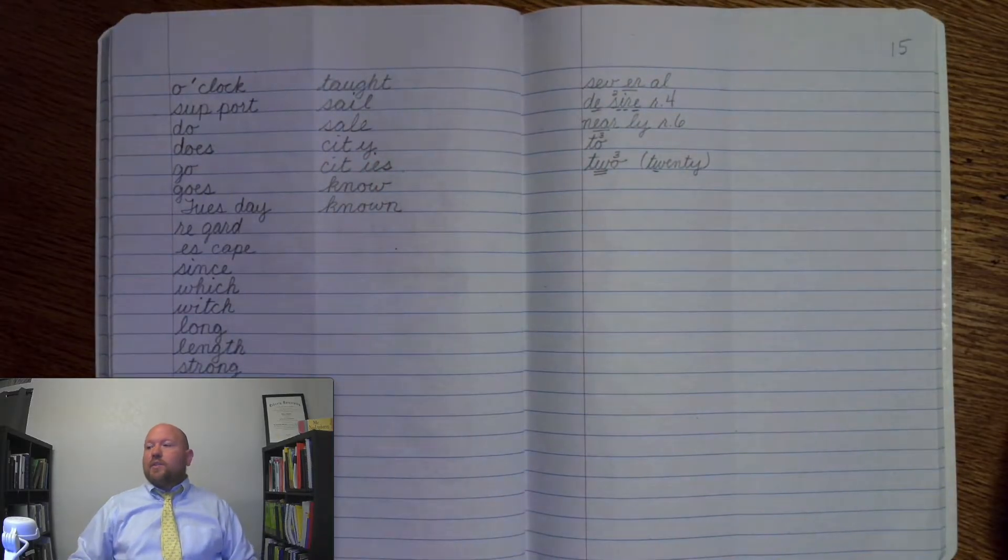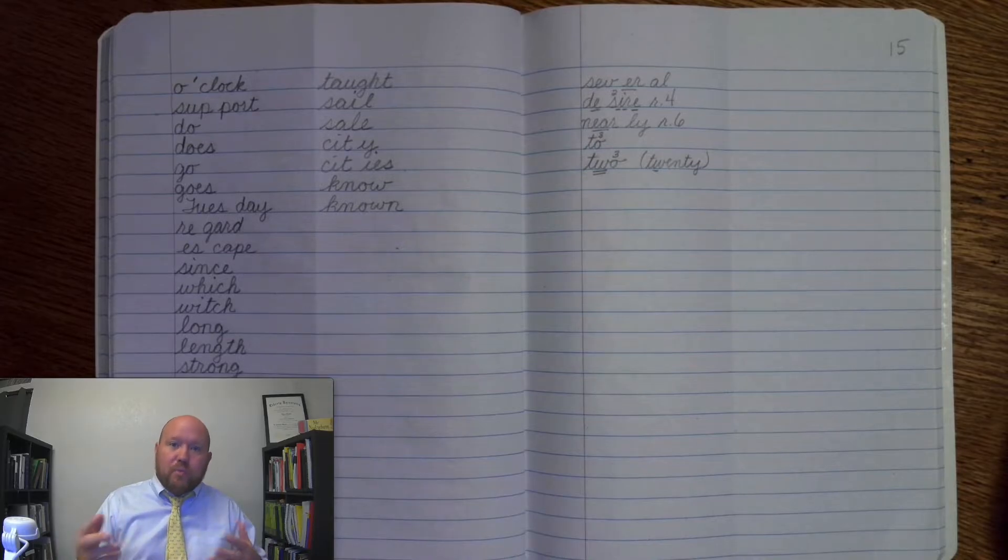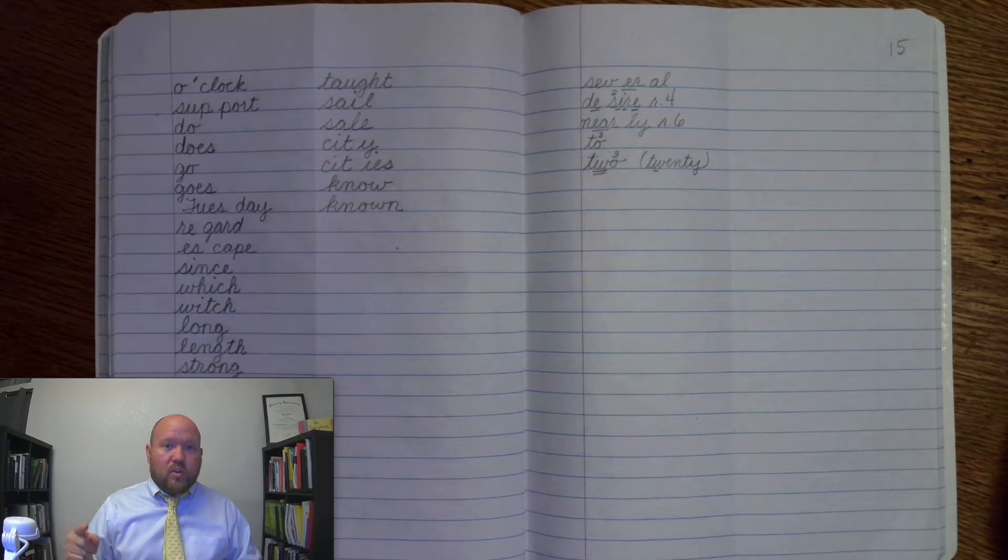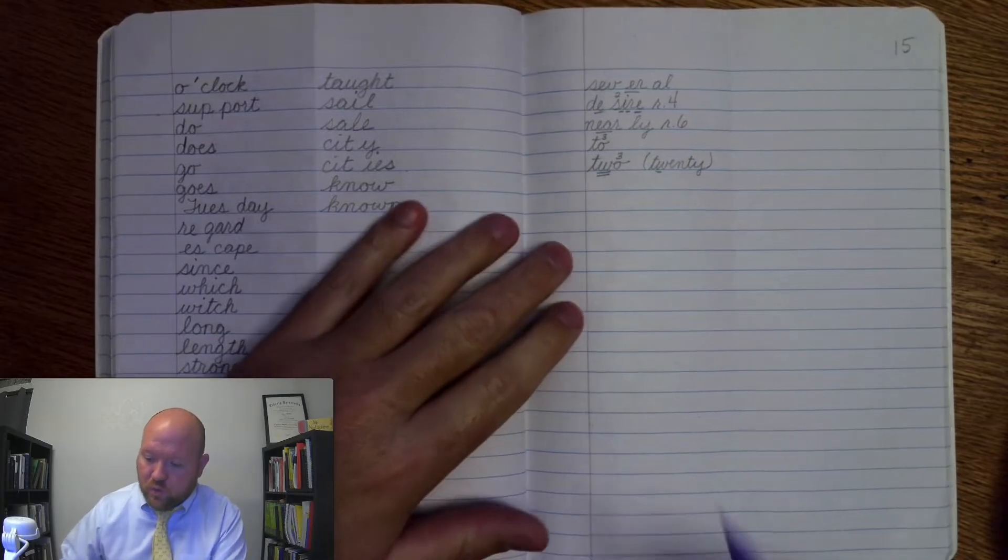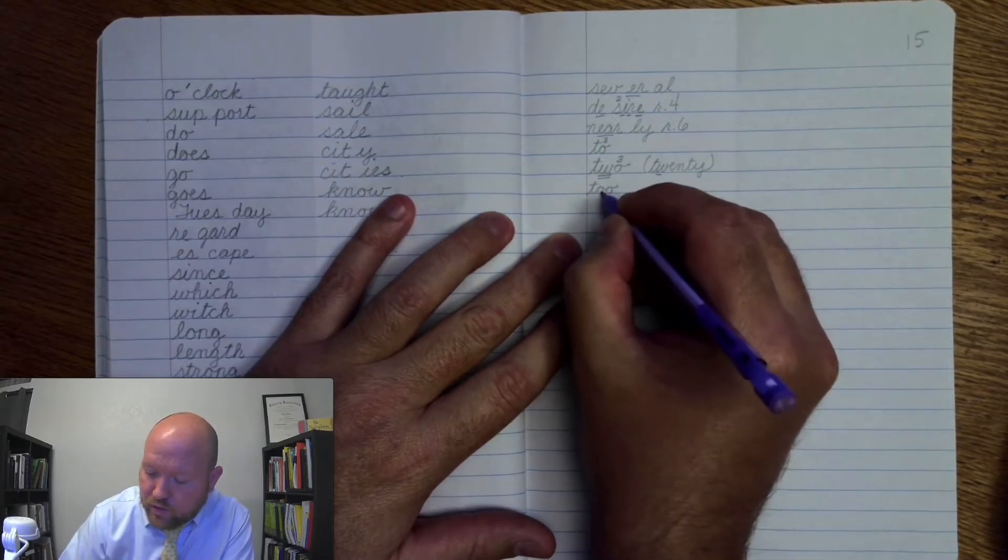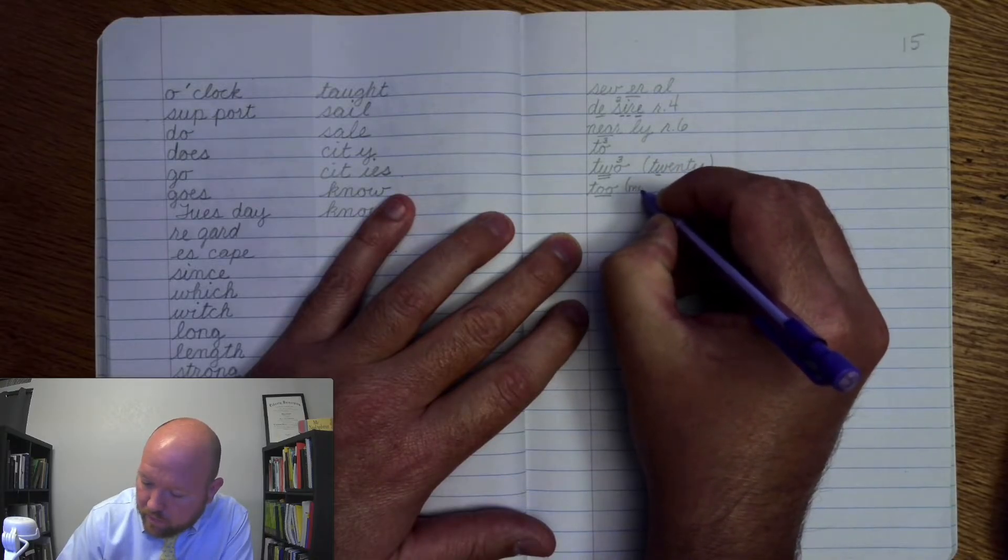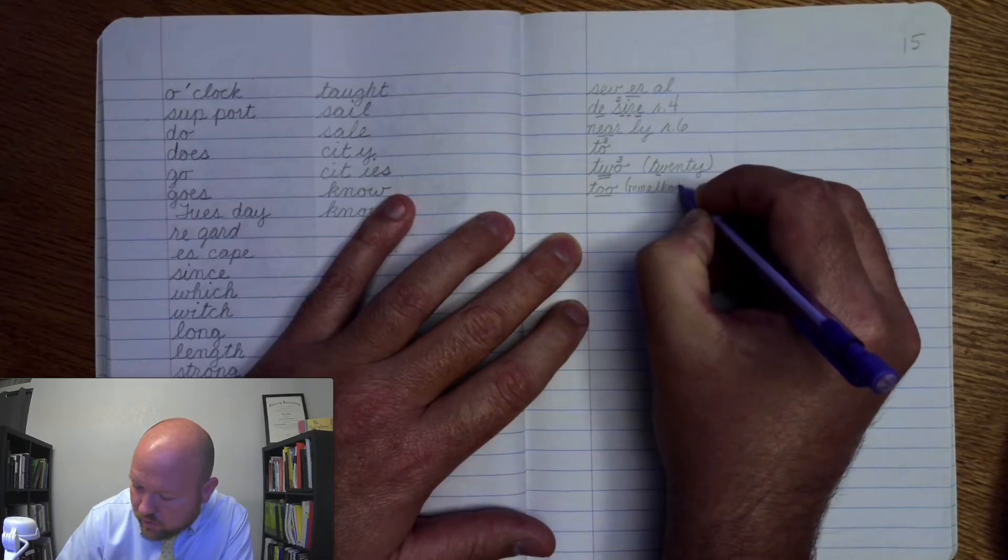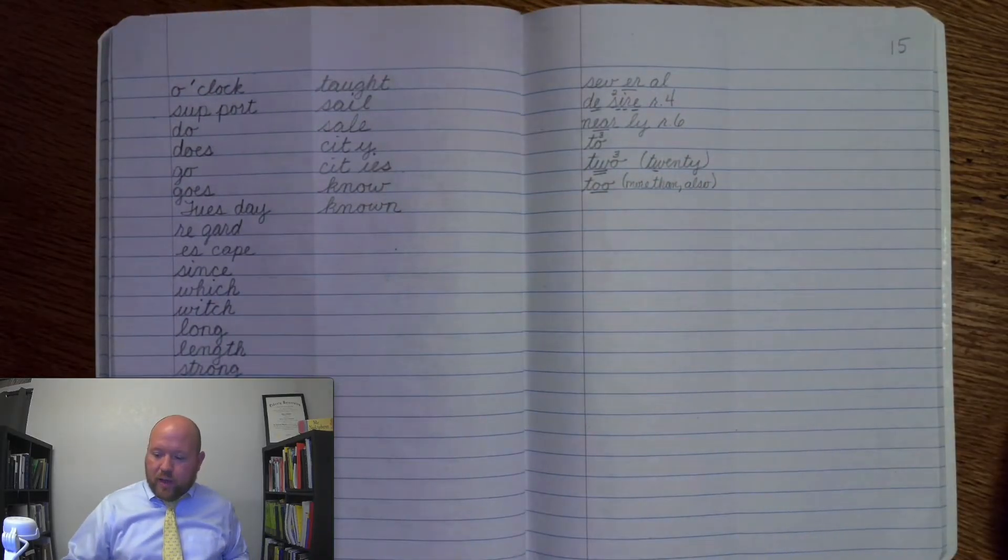The next word is too, like more than something, like that was too much fun, like it was just more fun than it was supposed to be, or you gave me too many pieces of pizza, I can't eat all this. Or also, I went to the store too, I went to the store also. And this one is T-O-O. Here we're using the double o phonogram. Markings: T-o-o, once, and here we can write more, more than, also. And so those are some ways to help remember that.